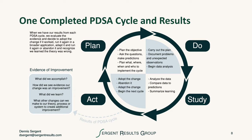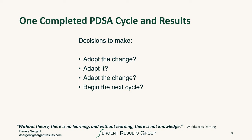When we've completed the PDSA cycle, we've got the results and the evidence. We evaluate that evidence and decide to adopt the change if it worked, run it again in a broader application, adapt it and run it again, or abandon it — and recognize that we learned our theory was wrong. We still learned. The important point is that we have decisions to make and we've got the evidence to make decisions with. As Dr. Deming said, without theory there's no learning, and without learning there's not knowledge. We have the opportunity to build on our knowledge base and move forward in improvement.